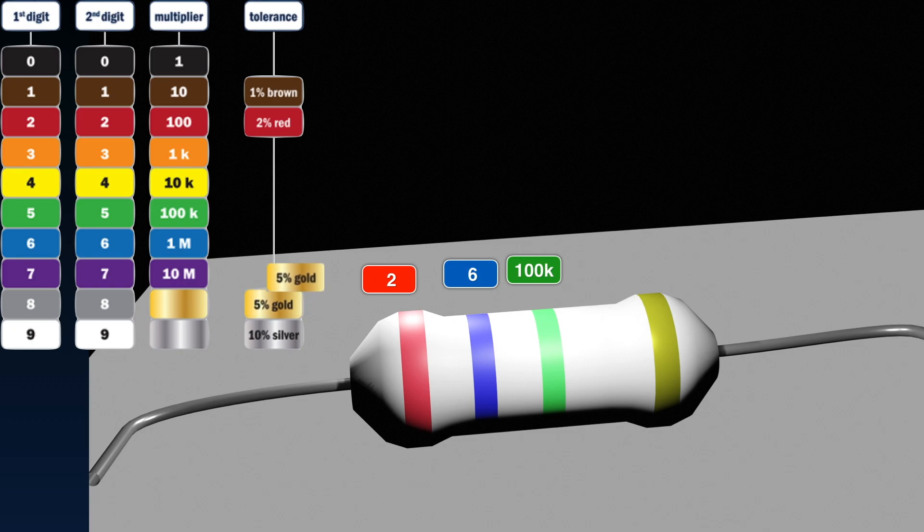Finally, the last band, in our example, is gold, and it's a 5% band. That means that when it's manufactured, it's been made to a tolerance of plus or minus 5%. You can pay more and have a 1% resistor, or a 2% resistor, or pay less and have a 10% resistor. For 1%, you'd have a brown band, for 2%, a red band, and for 10%, a silver band. But, in our example, we have a 5% carbon resistor.